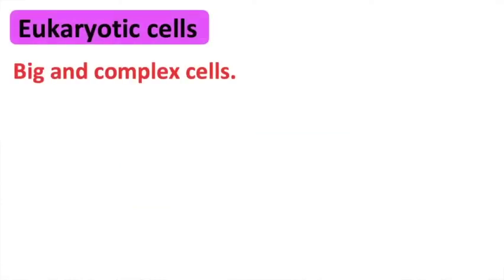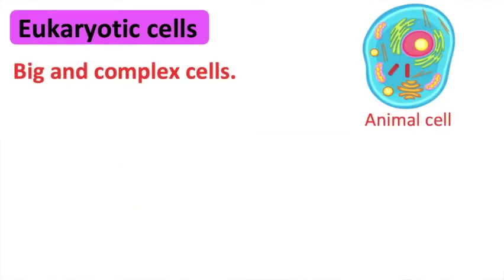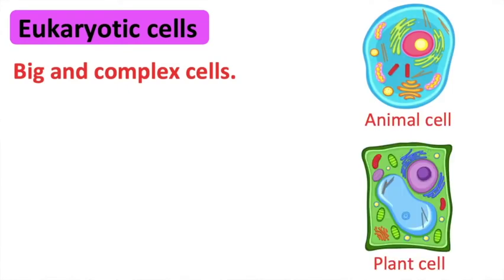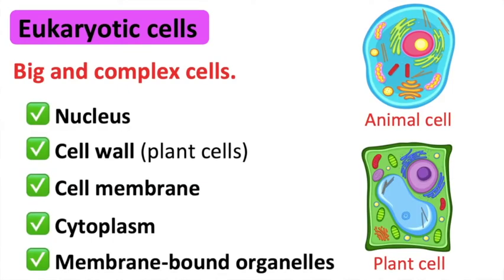Both animal and plant cells are eukaryotic cells. These are complex cells in which the genetic material is enclosed in a nucleus. They both have organelles. These are structures that perform different functions within the cells.